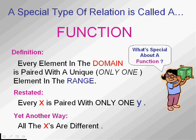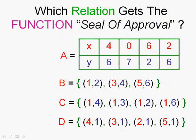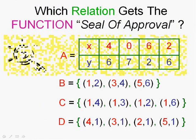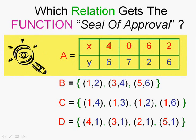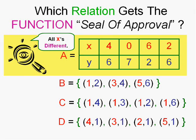Let's look at some examples. Allow me to demonstrate. For instance, relation A. Is every x mapped to only one y? Or, are all the x's different? And son of a gun, they are.